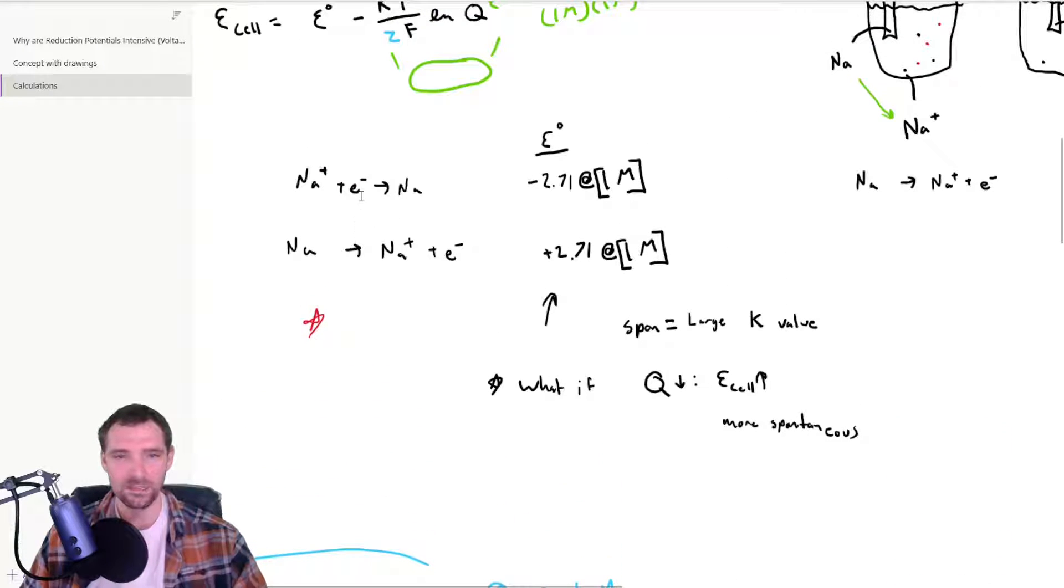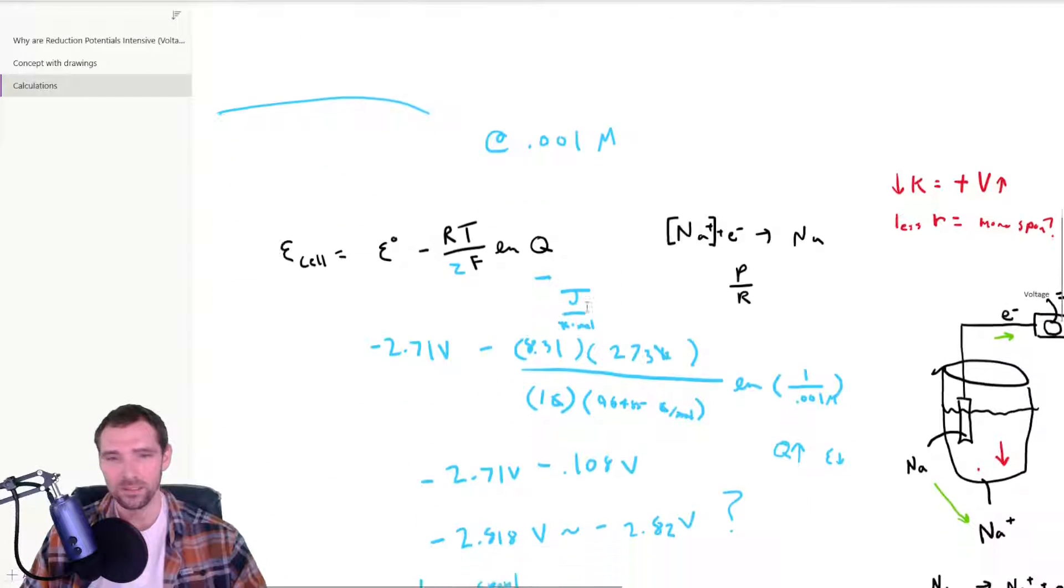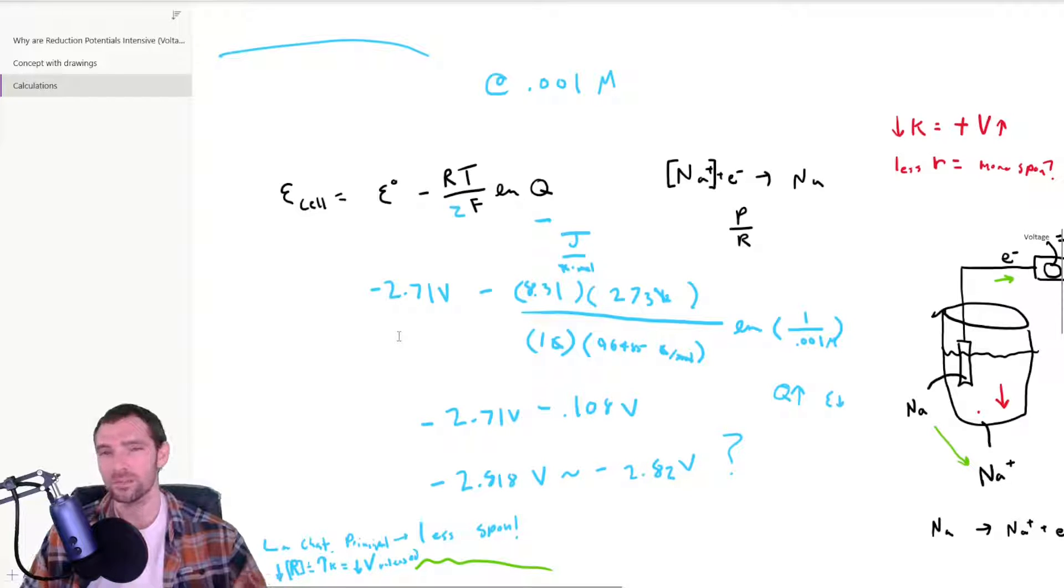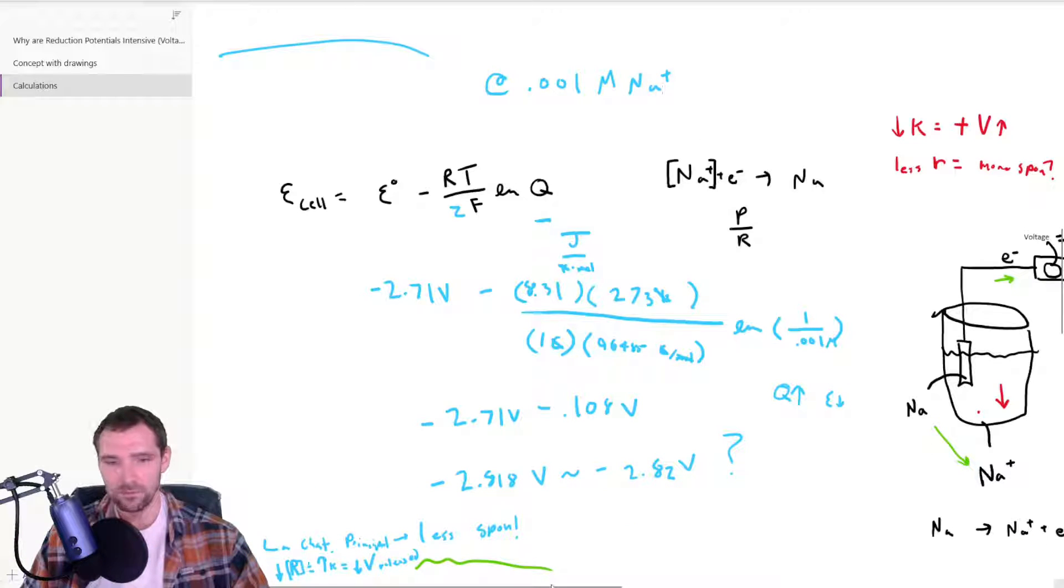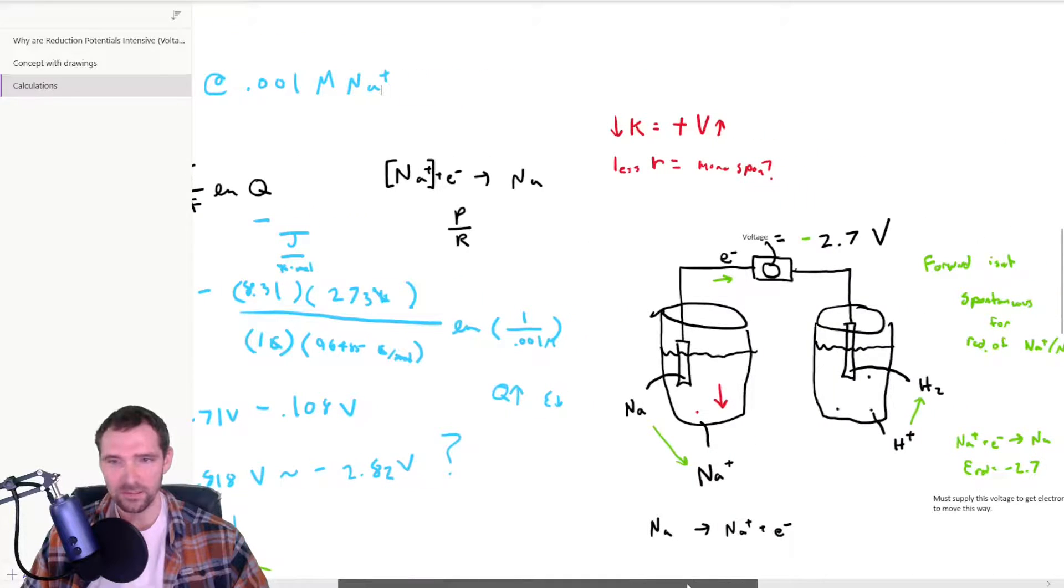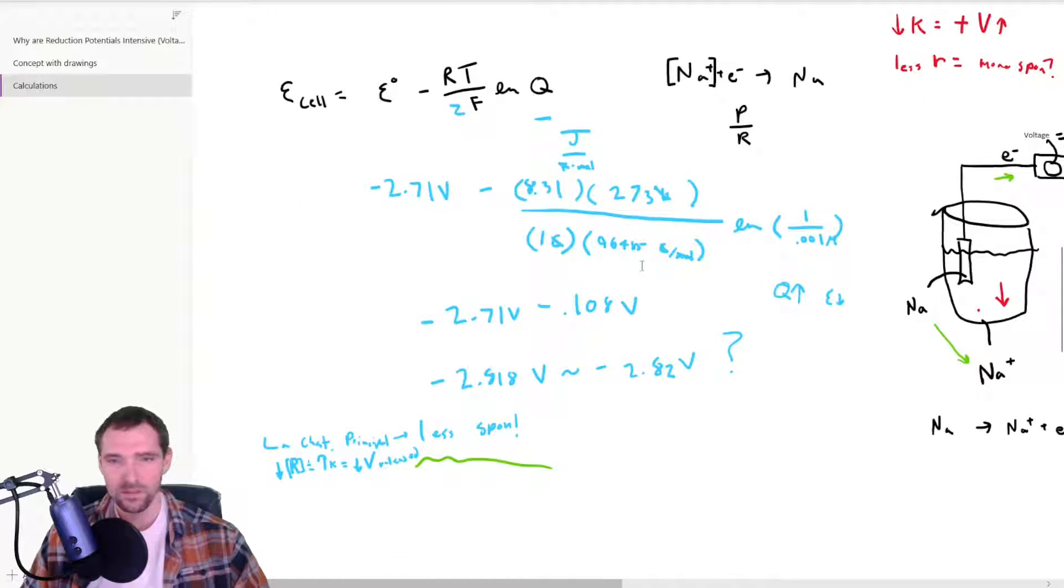And Le Chatelier's principle means that, well, that's going to change the amount of energy that's given off, which changes the spontaneity, and it all gets affected. So we need to be careful when we're talking about these things with concentrations. But if you actually want to look at this, let's imagine that we have this reaction right here, the standard reduction potential for sodium and its reduction potential right there. And you can plug this in and do some math. And let's say that we have a very low number of the sodium ions, the Na+.